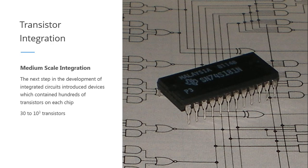The next step is medium-scale integration, containing around 30 to 1,000 transistors. Early calculators used this type of integration.